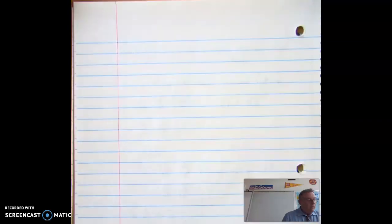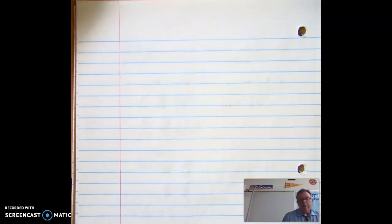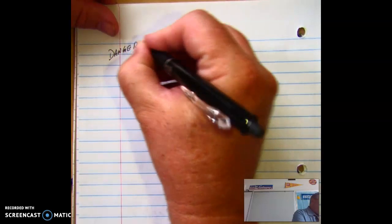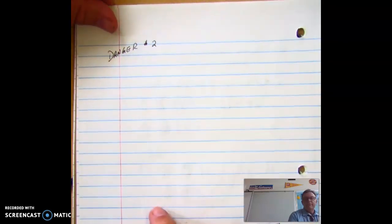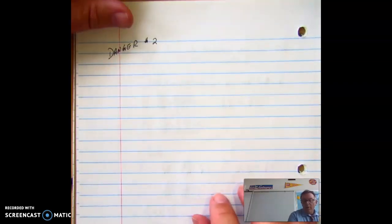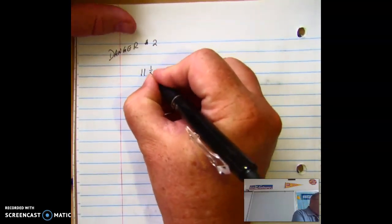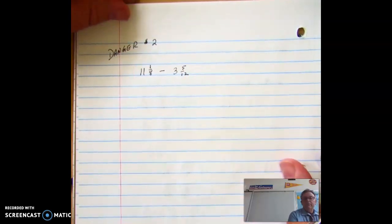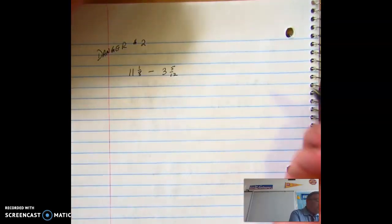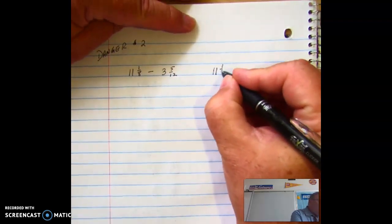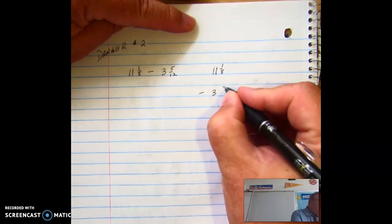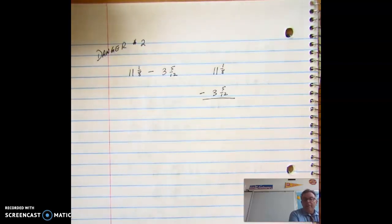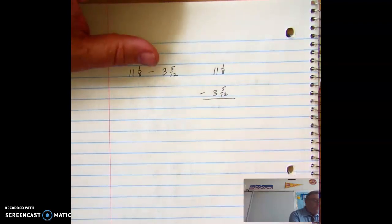Okay. So I've gone ahead and flipped over my paper. If you need the room, go ahead and do that. I'm going to show you what we're going to call danger number two. All right. So what I want to subtract is I have 11 and 1 eighth minus 3 and 5 twelfths. Okay. Looking good so far. I like mine vertical. 11 and 1 eighth minus 3 and 5 twelfths. So far so good.